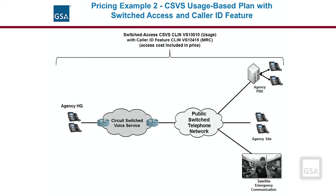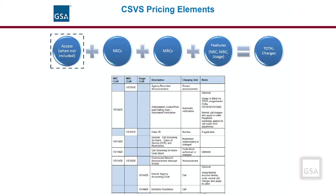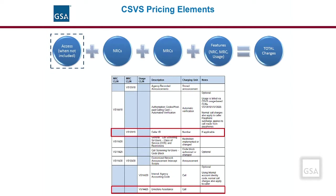This example shows the CSVS switched access option with the caller ID general feature. Note that the access cost is included in the price due to it being a switched access service. To put it all together for CSVS, there is a cost of access — in many cases it is a separate charge from the service itself, but in some options it is included in the cost of the service. Next are the non-recurring charges (NRCs) for the CSVS service options setup and the monthly recurring charges (MRCs) for the service itself. Finally, there are the charges associated with the features, which may have an NRC, MRC, or usage charge. For example, the directory assistance feature is a usage-based charge, the caller ID feature is an MRC, and the call screening feature is an NRC.